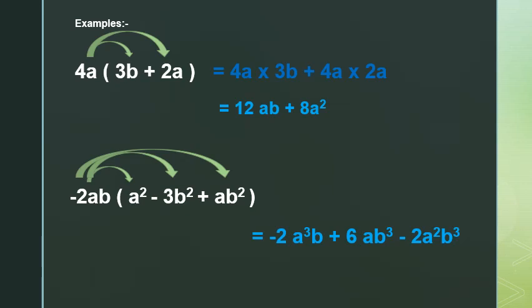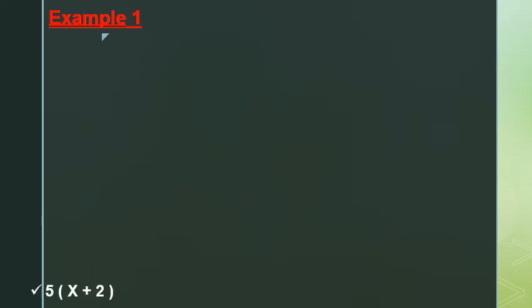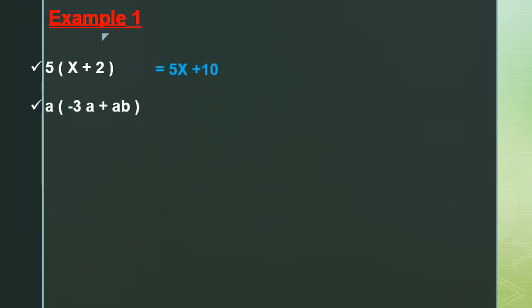Next example: 5 by (x + 2) in the bracket. We distribute 5 by x and 5 by 2, giving 5x plus 10. Number 2: a times (negative 3a plus ab). We distribute a by negative 3a and a by ab.